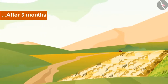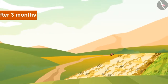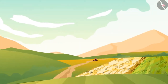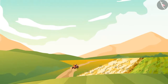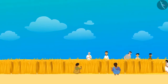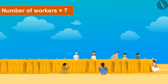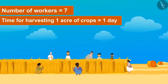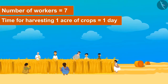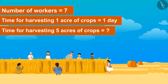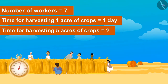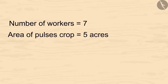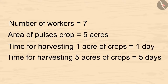Karim liked the suggestion of his friend and sowed the seeds in the similar way. After 3 months, see how the pulses crop of Karim is booming, although it's still time for the wheat crop to get ready for harvest. Karim called workers to help him harvest the pulses. Together, they harvested 1 acre of crops in a day. So can you tell how much time will they take to harvest 5 acres of crops? Kids, you can pause the video and calculate it. Yes, 5 acres of pulses will take 5 days to be harvested.